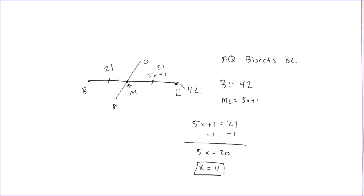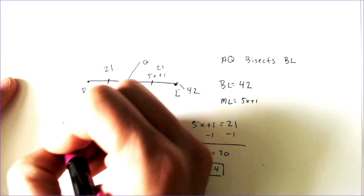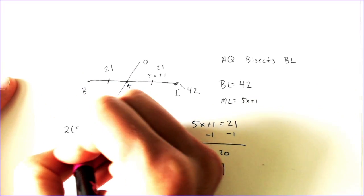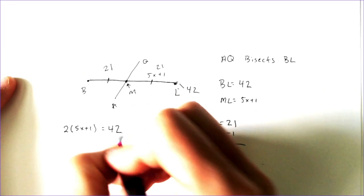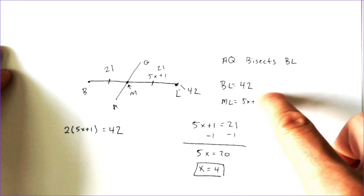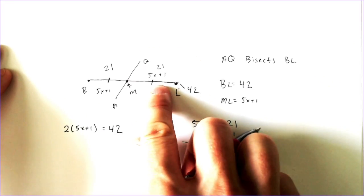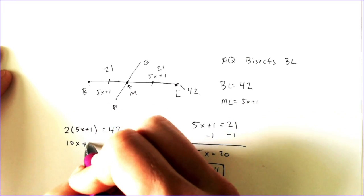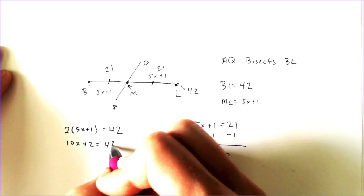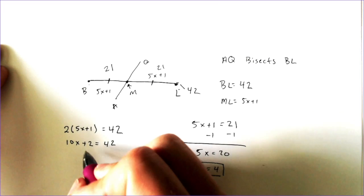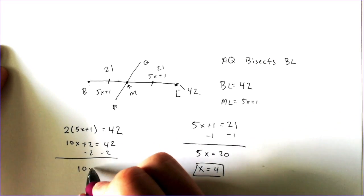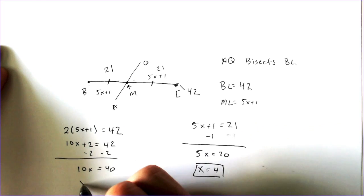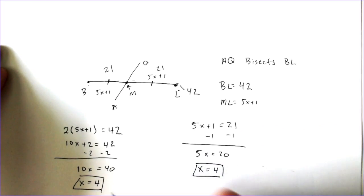The other way is how we did the other problems: literally add them up to equal the total. So we could double the 5x plus 1 to equal the whole thing of 42. Distributing the 2, then subtracting 2, we end up with 10x equals 40. When I divide by 10, I get x equals 4 again.